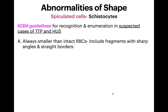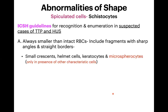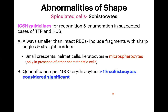According to the guidelines, when do you call a cell a schistocyte? Schistocytes are always smaller than intact RBCs, homogeneously stained, and include fragments with sharp angles and straight borders — such as small crescents, helmet cells, keratocytes, and microspherocytes. Microspherocytes should be counted as schistocytes only when other characteristic cells like crescents, helmet cells, and keratocytes are also present; otherwise, do not count them as schistocytes.